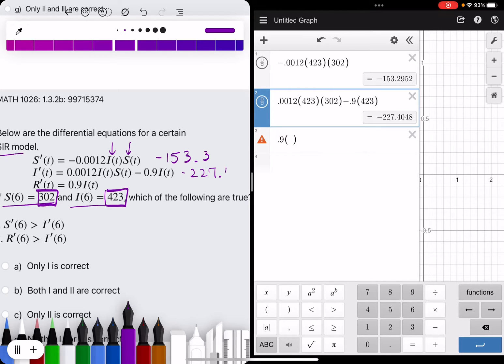I'll do 0.4, shouldn't really matter. And then for R prime at the bottom we have 0.9 times I, or 423. So we have 380, positive 380.7.